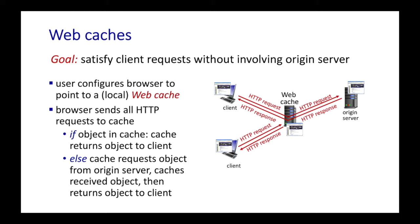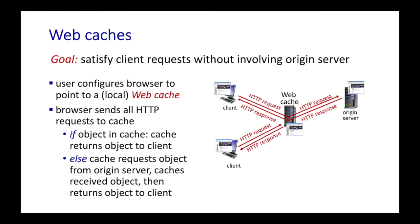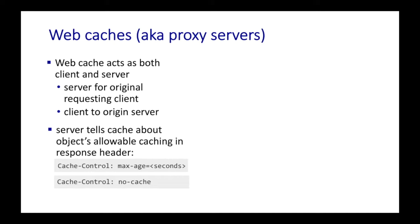The origin server is not even involved in this second request. In this example, we've seen that a web cache acts in both a client and a server role. It operates as a server with respect to the original requesting client, but also acts as a client to the origin server. The origin server can tell the cache about the object's allowable caching behavior, contained in the response header. For example, the cache-control header can specify a maximum amount of time that an object could be cached, or that maybe an object should not be cached at all.